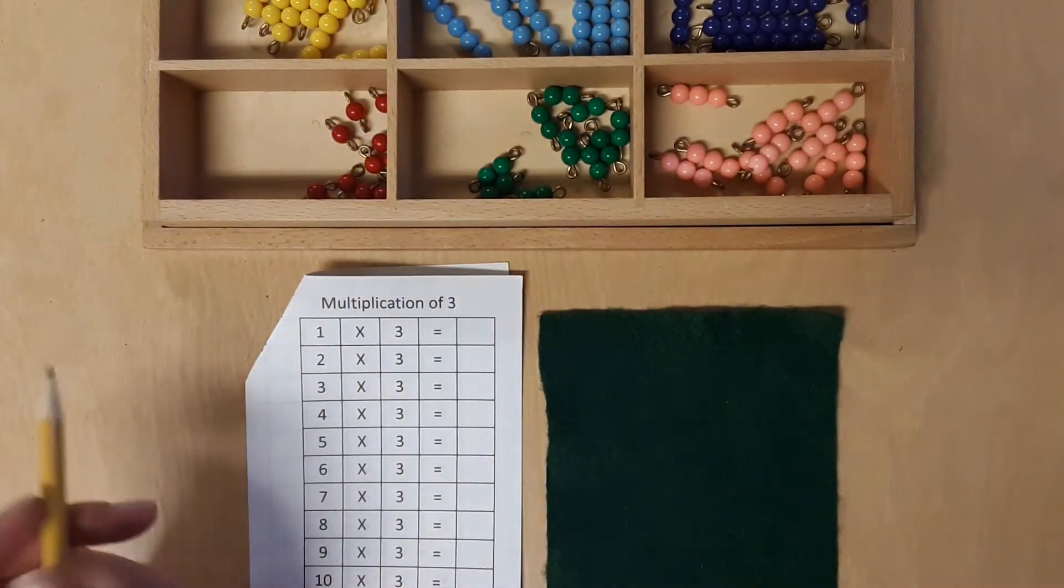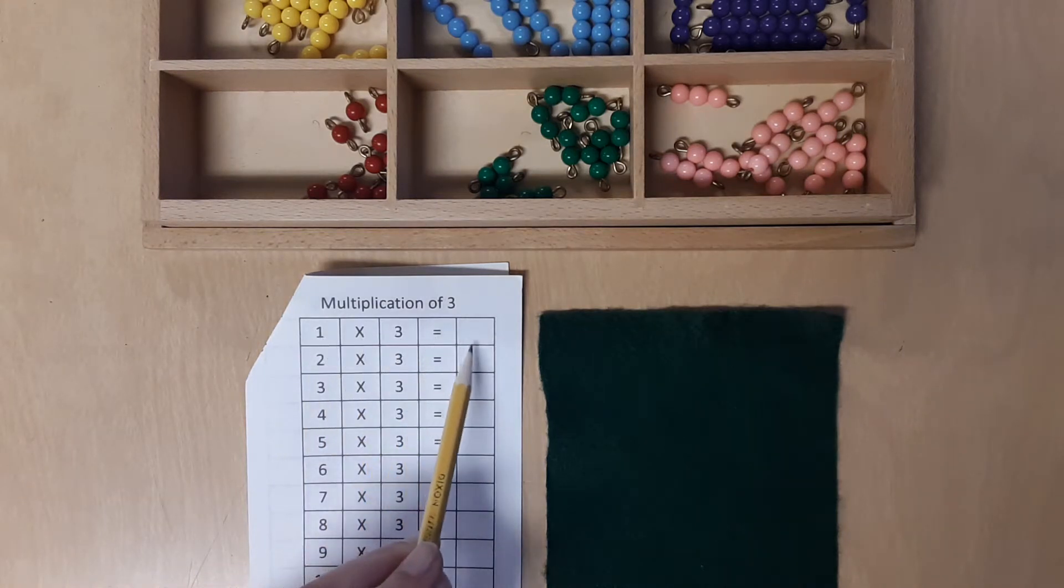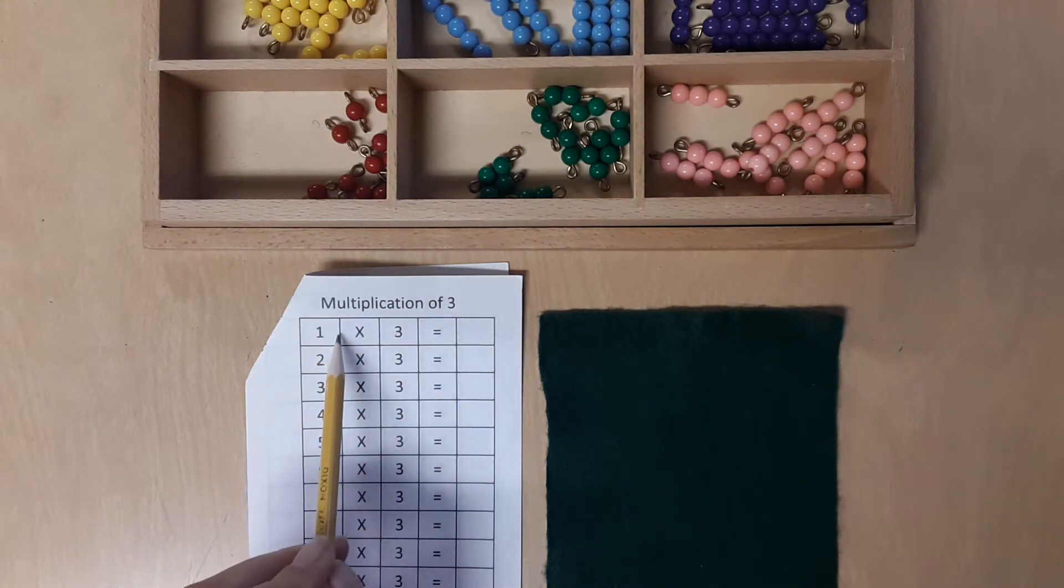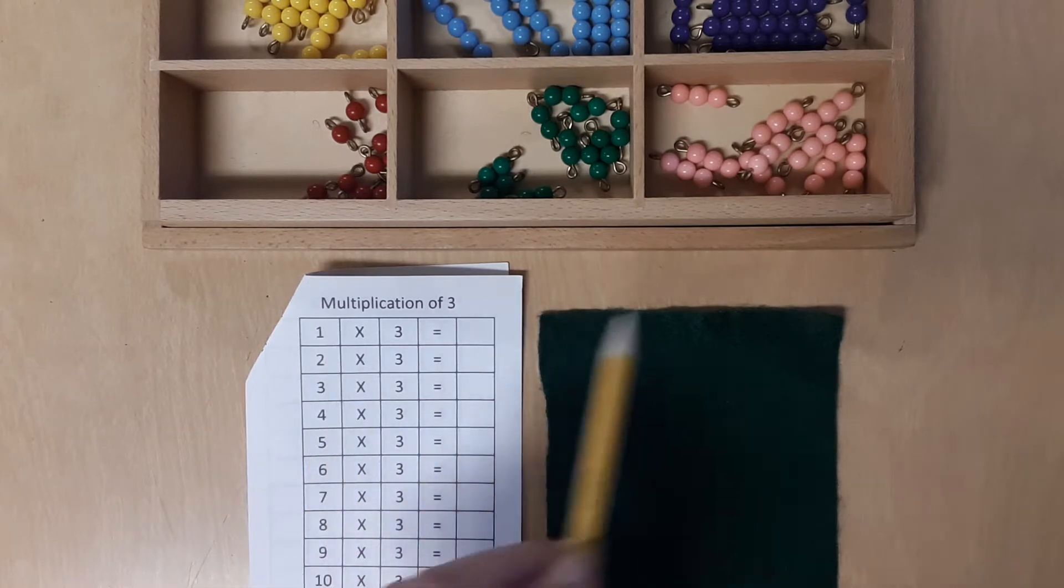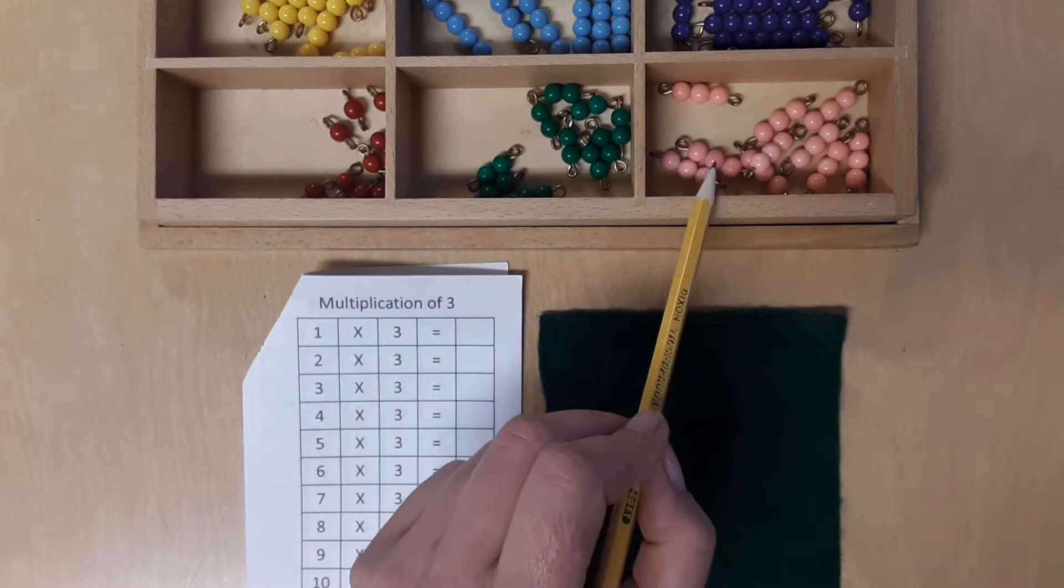Okay, so let's start by reading the first equation. 1 times 3 equals blank. This is telling us that we need to take one of the 3's beads. So this is 1, 2, 3.